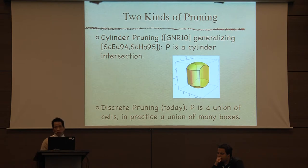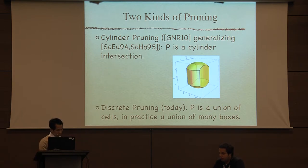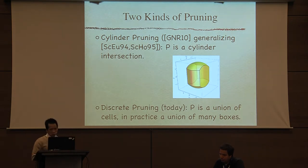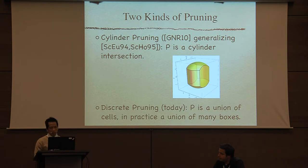Until now, we only knew one choice of pruning set: the one due to Schnorr. It's actually a cylinder intersection — an intersection of several cylinders, as you can see in this picture; it's not a ball. This choice is natural because of the way enumeration works. Today I'm going to describe another choice, which I call discrete pruning. Here the set will be completely different — not a cylinder intersection. Instead, it's going to be a union of cells, and in particular a union of many boxes.